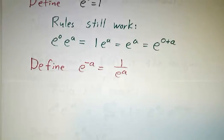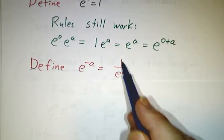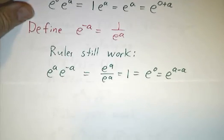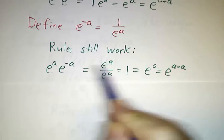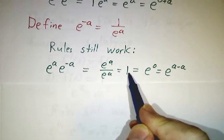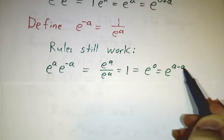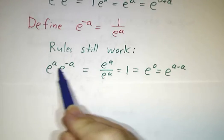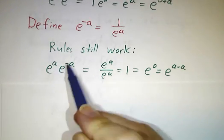And the next thing is we define negative powers. We say e to the minus a, we'll define that to be 1 over e to the a. And we still have everything working nicely. Because e to the a times e to the minus a, well that's e to the a over e to the a, and that's 1, and that's e to the 0. And 0 is the same thing as a minus a. So the rule that e to the a times e to the b is e to the a plus b, it works even when a or b might be negative.